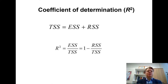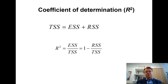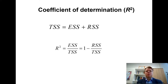Another way of calculating R-squared, which is sometimes more convenient, is 1 minus RSS divided by TSS. RSS is the residual sum of squares, so this is equivalent to taking 1 minus the unexplained proportion of the variance. The total variance decomposes into explained and unexplained parts, so both formulas are equivalent ways of calculating this commonly used measure of empirical fit.